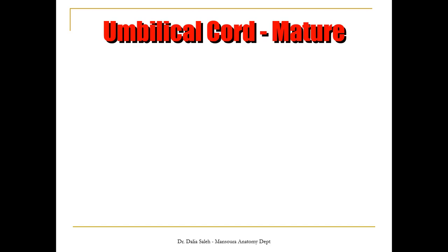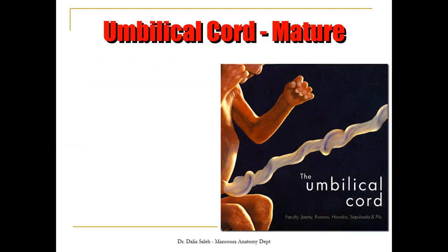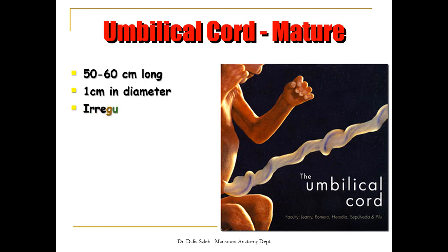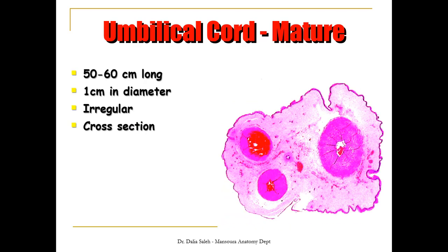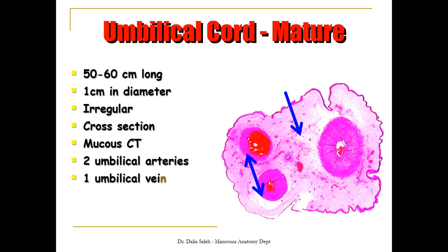The mature, full-term umbilical cord is about 50 to 60 cm in length and about 1 cm in diameter. It looks irregular in shape because the umbilical vessels are much longer than the actual length of the cord. In cross-section, it shows mucous connective tissue — Wharton's Jelly — containing two umbilical arteries and one umbilical vein, as well as the vitelline duct connecting the intestine to the yolk sac, and the allantois.